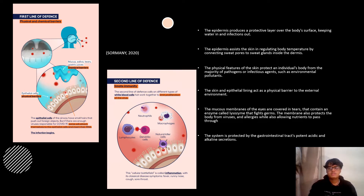Mucous membranes of the eyes are covered in tears that contain enzymes called lysozymes that fight germs and aid in the protection of eyes against infections. Certain acidic fluids, including urine, vaginal secretions, and gastric juice, kill pathogens by lowering the pH.